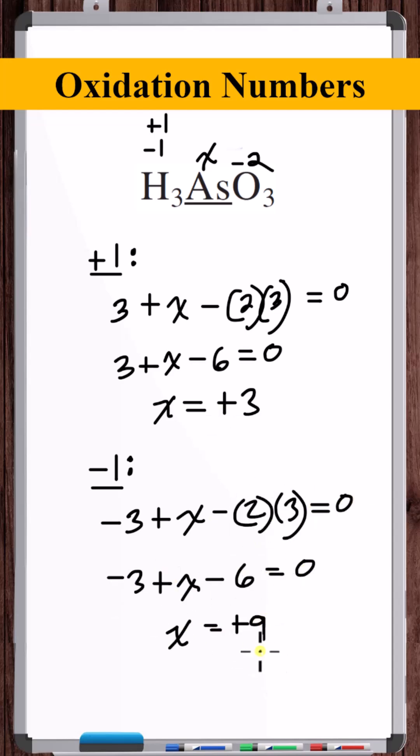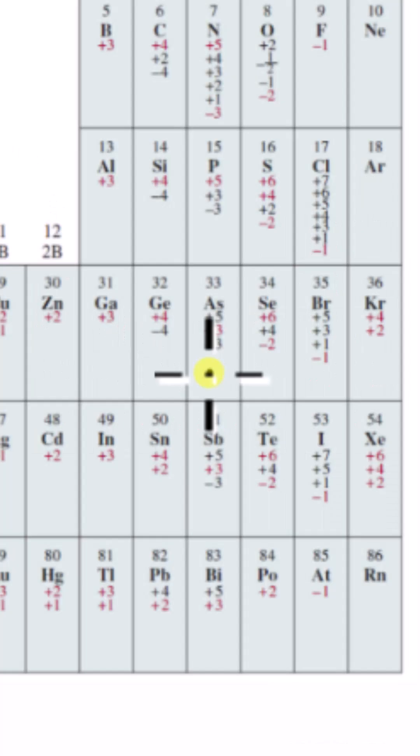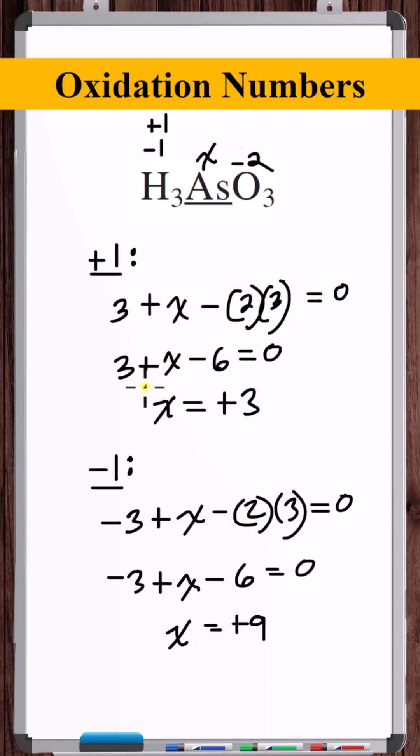Plus 3 or plus 9? If we look at the oxidation number chart for arsenic, plus 9 is not an option, but plus 3 is the most common, so the oxidation number of arsenic is plus 3.